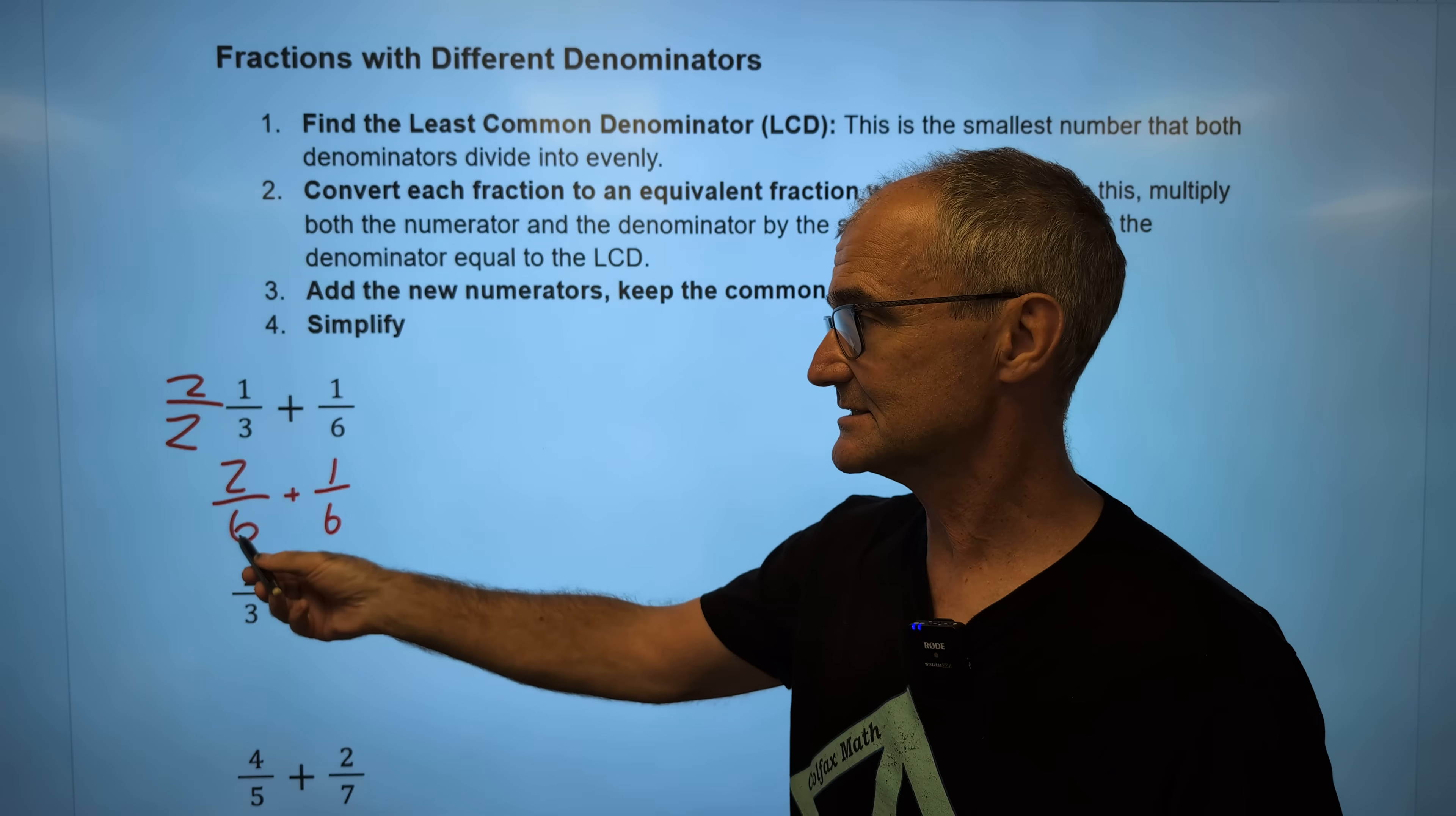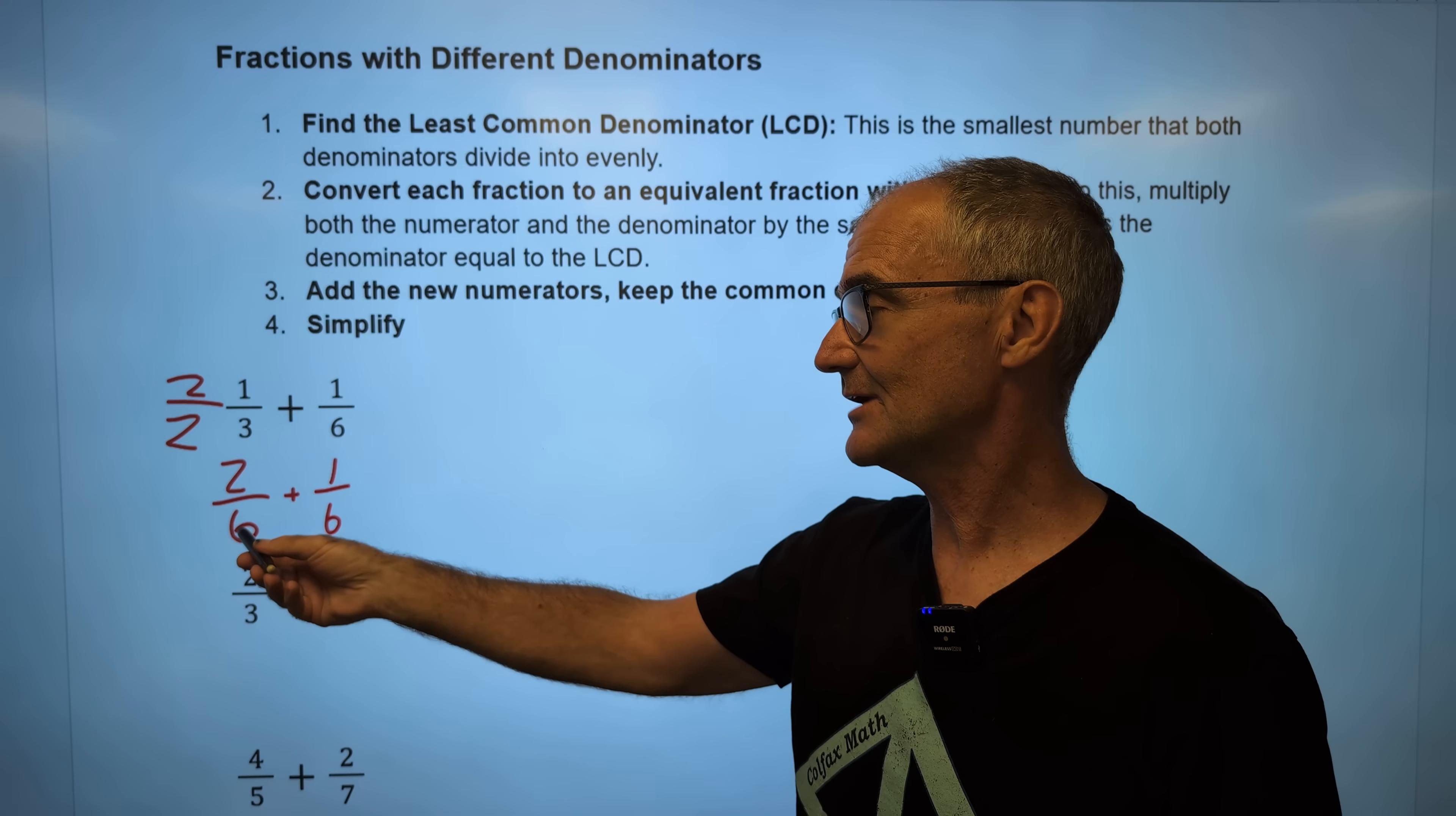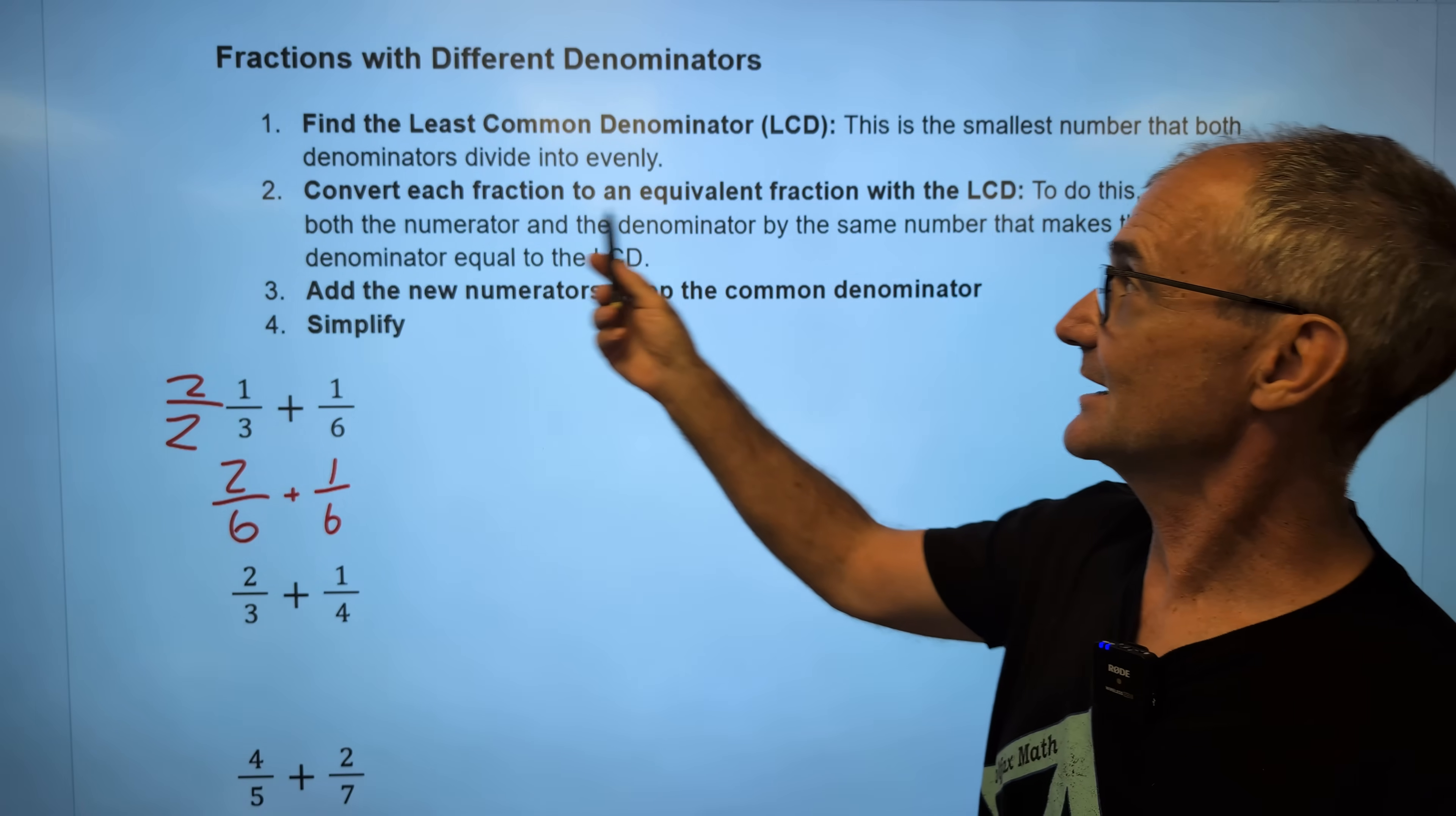Now I have that common denominator. This two-sixths is the equivalent of one-third. They have the same weight. They are the same thing. They are equivalent. But now I've converted it to a similar denominator. So now I have two-sixths plus one-sixth.